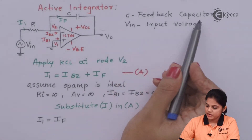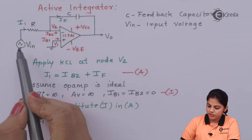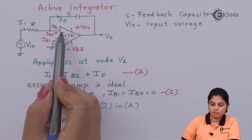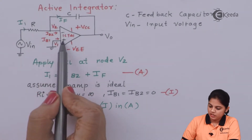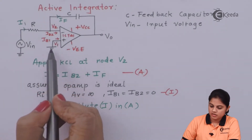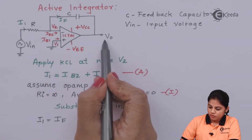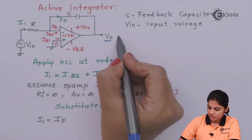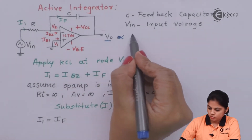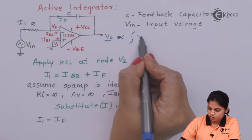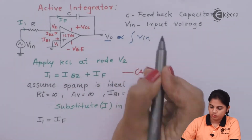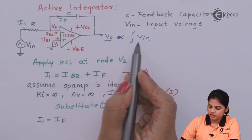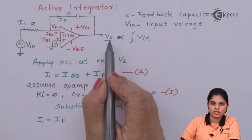Here C is the feedback capacitor, V-in is the input voltage applied to the inverting terminal, and the non-inverting terminal is grounded. Now we want the output voltage to be proportional to the integration of the input voltage — this is what we want to derive.